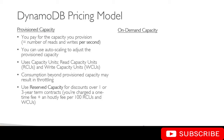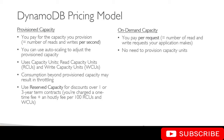Then we have on-demand capacity. Here we don't have the concept of provisioning capacity units; instead you pay per request — that is, the number of read and write requests that your application makes. There is no need to provision any capacity units, and this is especially good for uneven workloads.